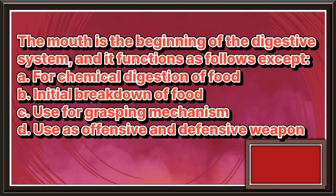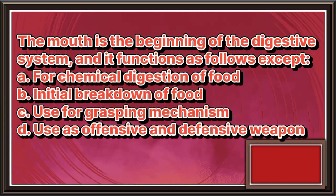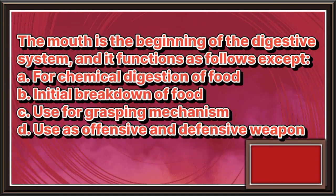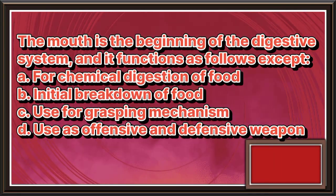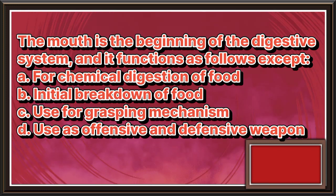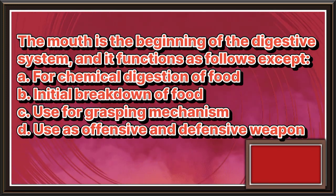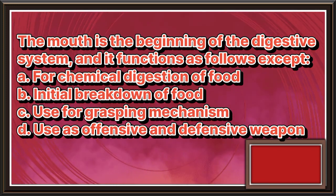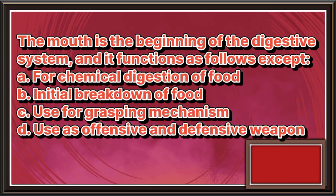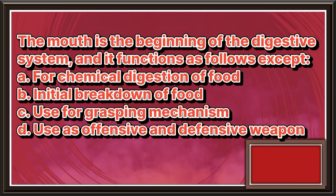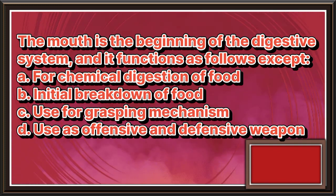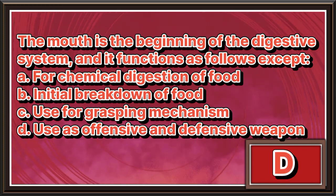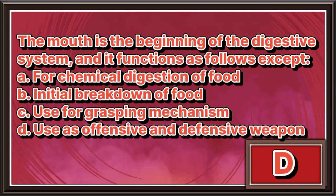The mouth is the beginning of the digestive system, and it functions as follows, except. a. For chemical digestion of food. b. Initial breakdown of food. c. Used for grasping mechanism. d. Used as offensive and defensive weapon. The answer is letter d.